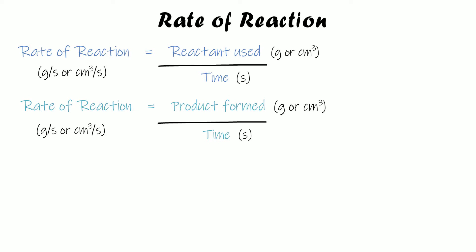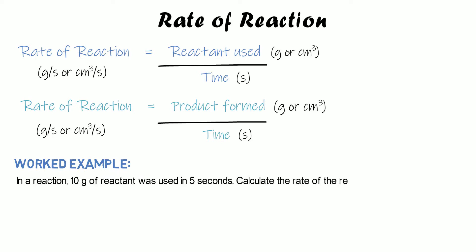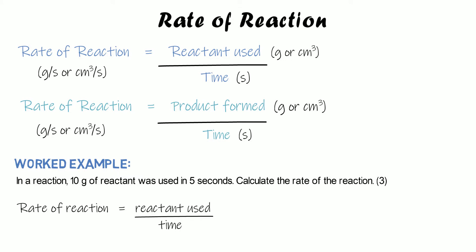Here's an example. In a reaction, 10 grams of reactant was used in 5 seconds — calculate the rate of reaction. Because we're told how much reactant was used, we do reactant used divided by time: 10 grams divided by 5 seconds equals 2 grams per second. The unit is grams per second because reactant used is in grams and time is in seconds.